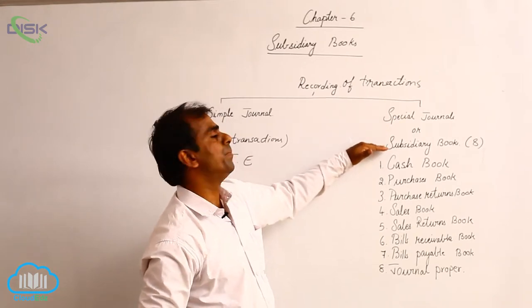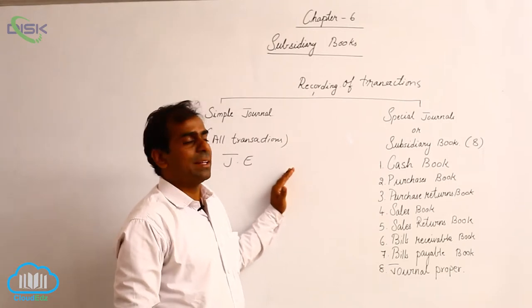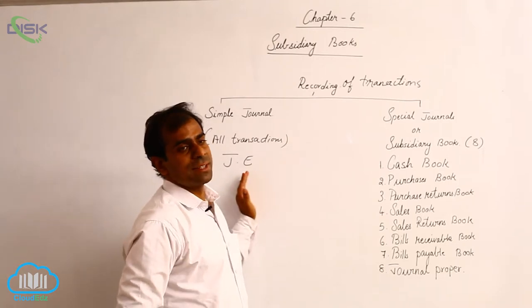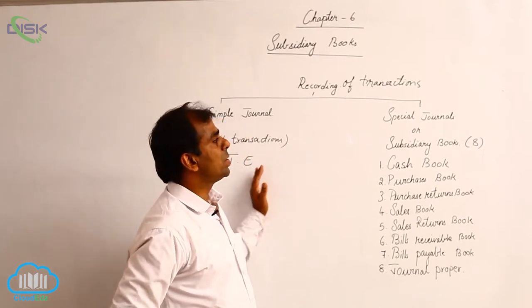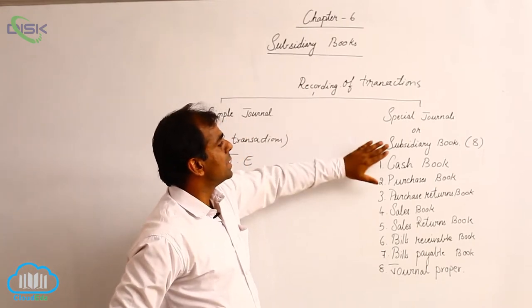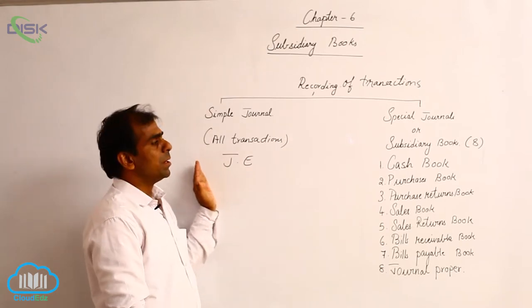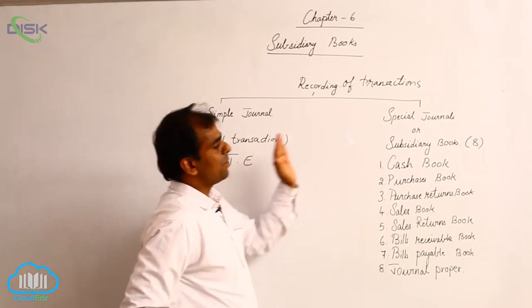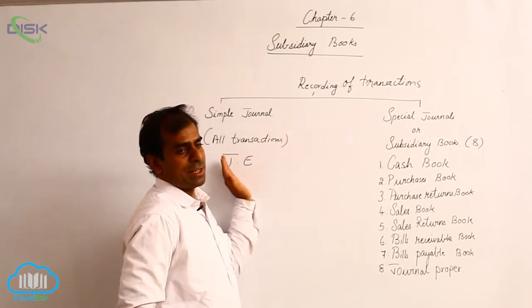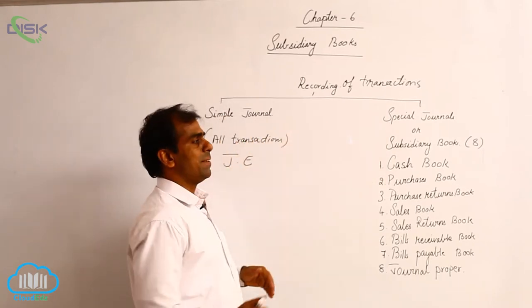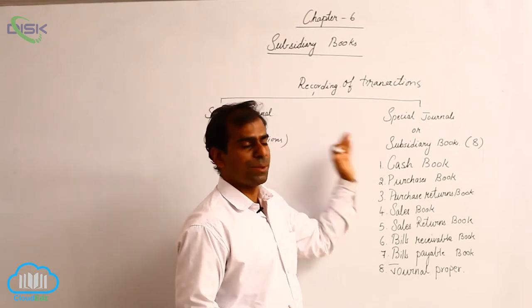If businesses are big and the number of transactions are many, it is advisable to use subsidiary books rather than a simple journal. Now, why do we have to use subsidiary books but not a simple journal? Because there are several advantages of using subsidiary books.